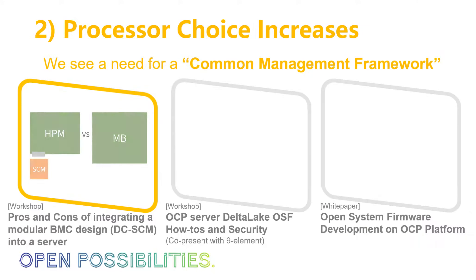Those are the three topics in the first trend. Now the second trend: processor choices are increasing. As I said, five years from now, if we don't make the right choice for a management framework as this proliferation happens, we're going to have a nightmare — a hard time servicing all these different configurations because each one would be unique. So we need a management framework that is common, easily scaled across different processor configurations and families — a processor-agnostic firmware framework.